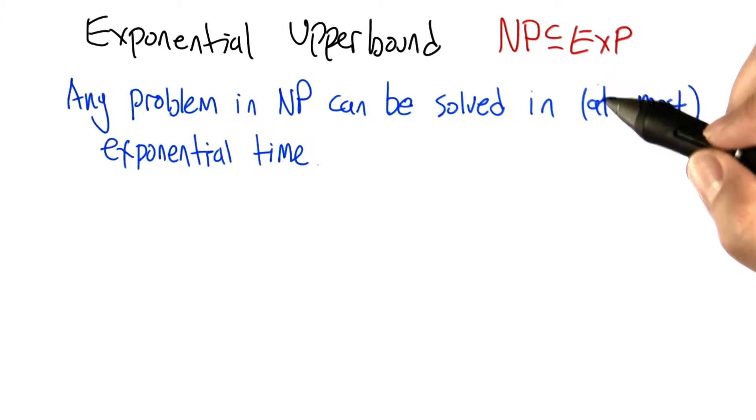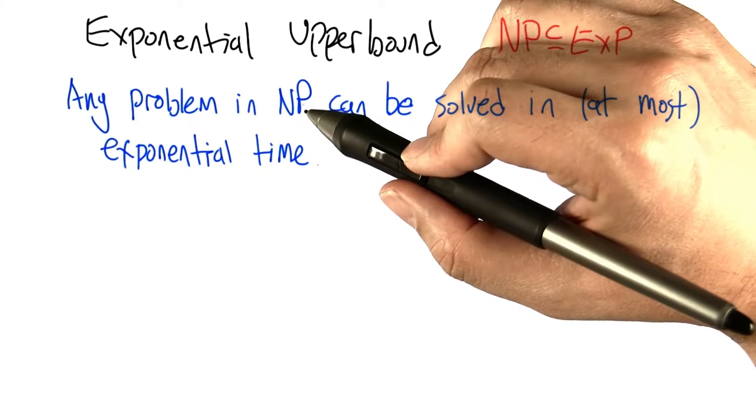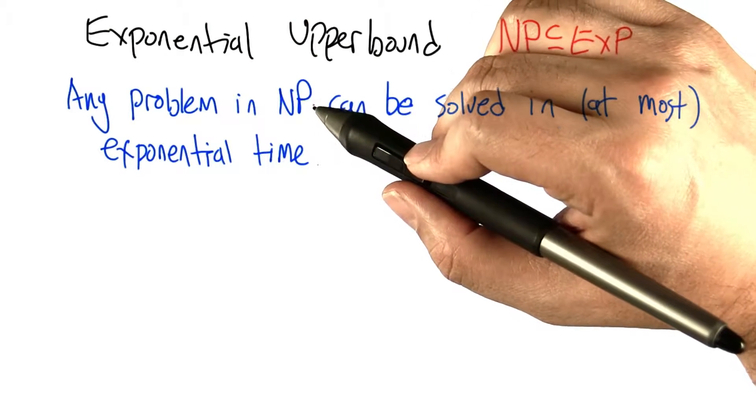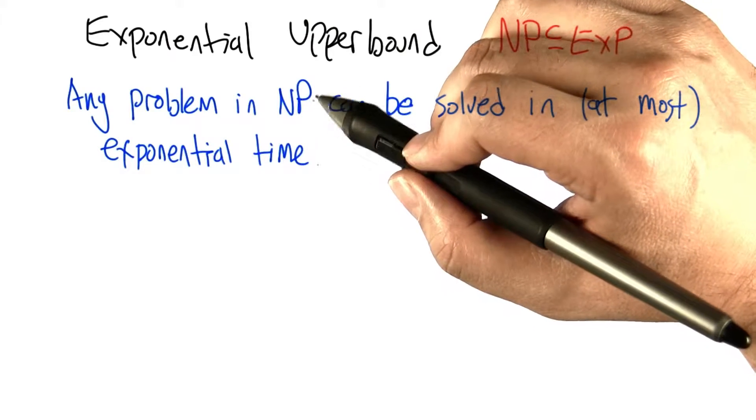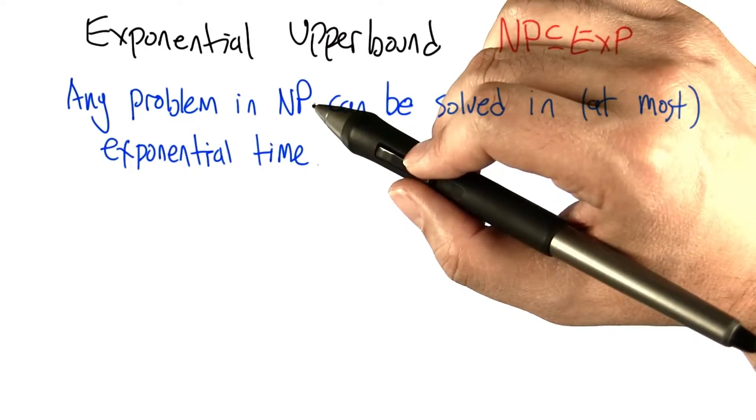By includes, I mean that it takes at most exponential time. None of the problems in NP can be any harder than that, say requiring double exponential time or factorial time or whatever. They can all be solvable in exponential time.